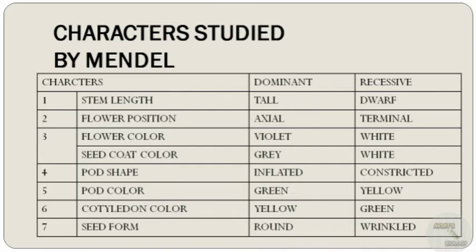For seed form, round is dominant over wrinkled. These seven different characters were studied by Mendel. Mendel chose pea plants because pea plants have well-defined, discrete characters. The flowers are bisexual, the plants predominantly self-fertilize, pea plants are easily hybridized, can be easily cultivated, and have a relatively short life cycle.